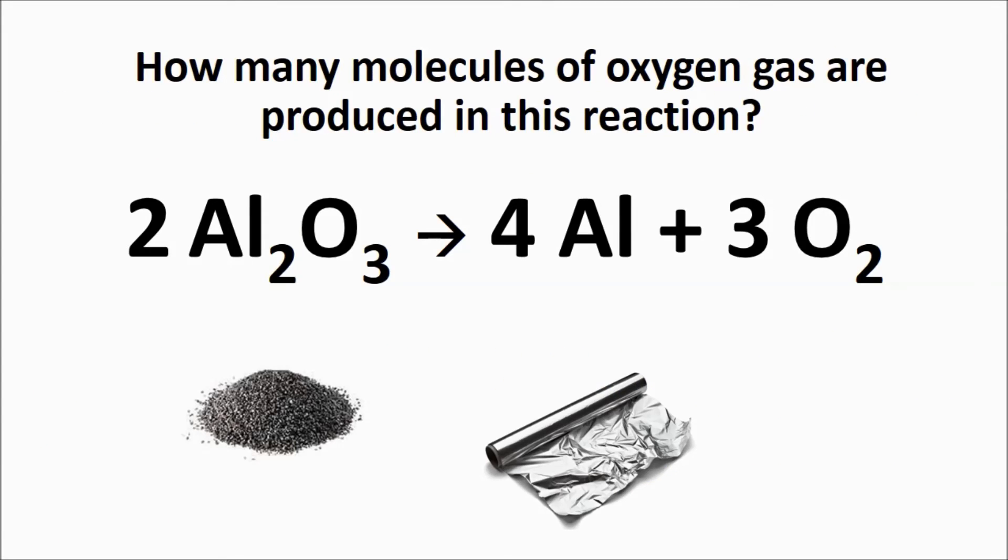Alright, last question. How many molecules of oxygen gas are produced in this reaction that also makes pure aluminum? Again, we look at the product side of the equation. Because there's a coefficient of 3 in front of the O2, we know that 3 molecules of oxygen are produced.